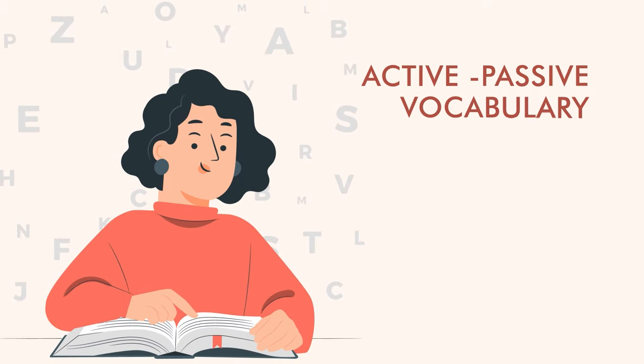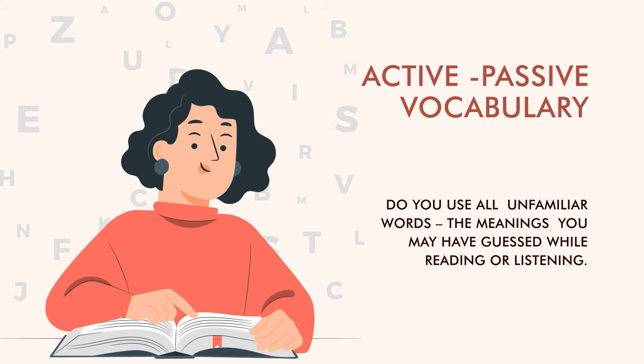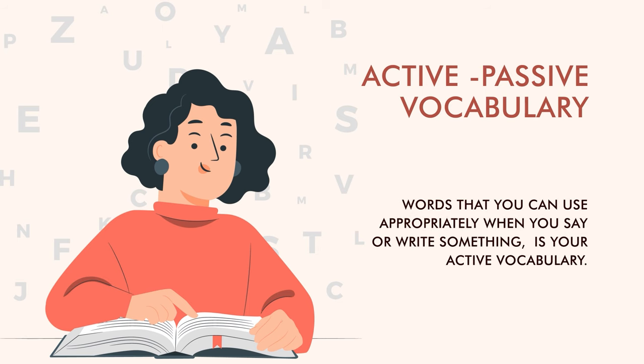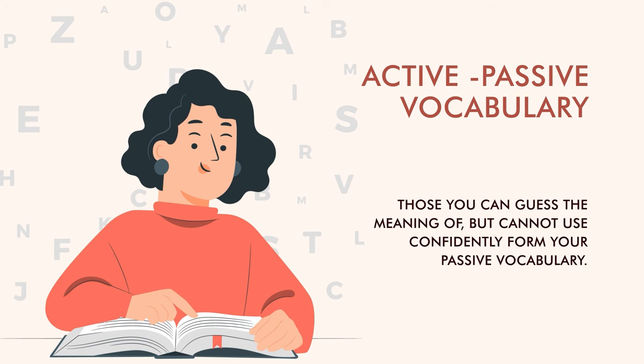So let's look at this title — active and passive vocabulary — and try to answer this question: do you use all the unfamiliar words, the meanings of which you may have guessed while reading or listening? Obviously you don't. Our listening and reading vocabulary is much more than our speaking or writing vocabulary. So words that you can use appropriately when you speak or write something is your active vocabulary, and those you can guess the meanings of but cannot use confidently form your passive vocabulary.